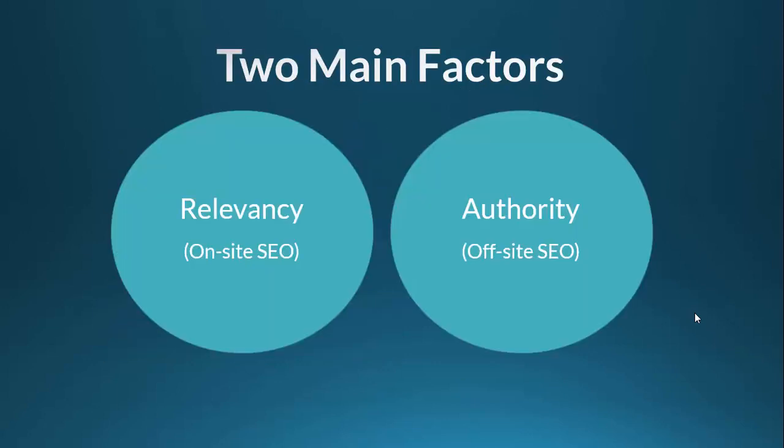So again, the two main factors are relevancy and authority. Relevancy deals with on-site search engine optimization — that's how your site is structured and which keywords you're targeting. Authority is off-site search engine optimization — that's more the link building portion of search engine optimization. We'll be diving into these two factors quite a bit throughout this course, and giving you a good understanding of them is a great starting point.